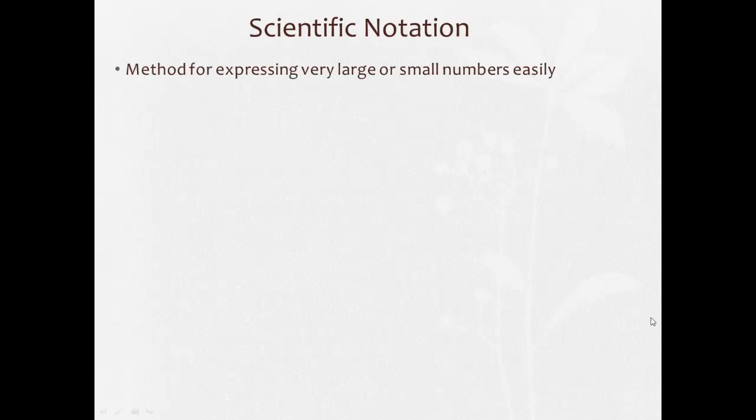So, scientific notation is a method for expressing very large or very small numbers easily. All right, so if we're dealing with a number like a million, we don't always want to take the time to write out all these zeros. So, we can just write it 1.0 times 10 to the 6th.